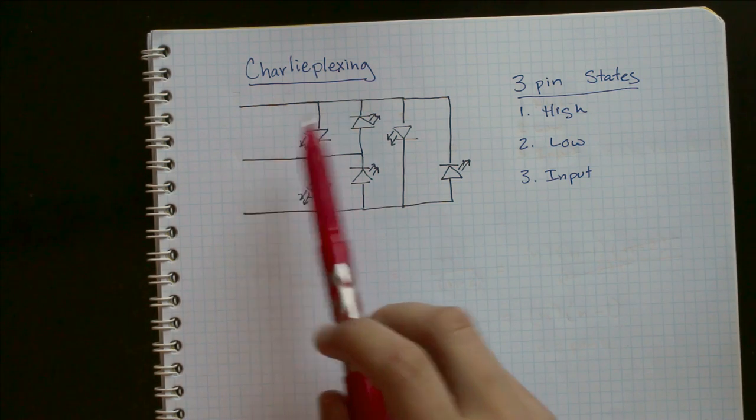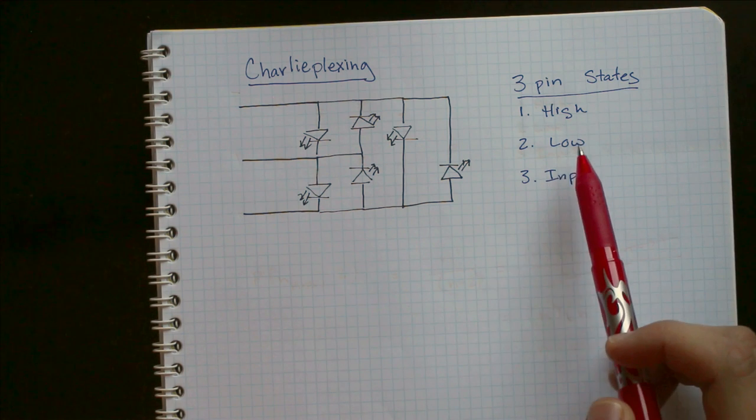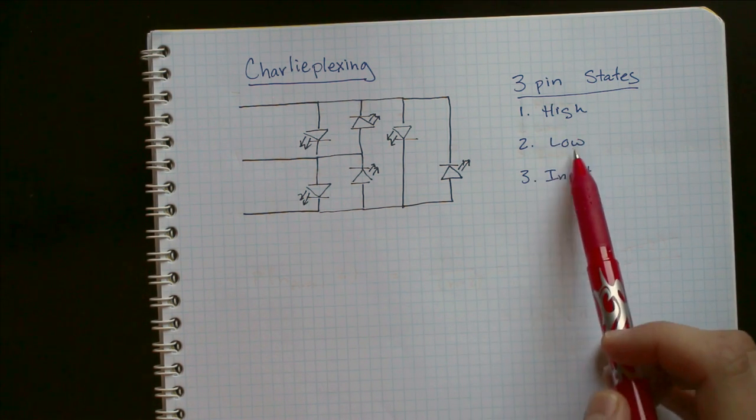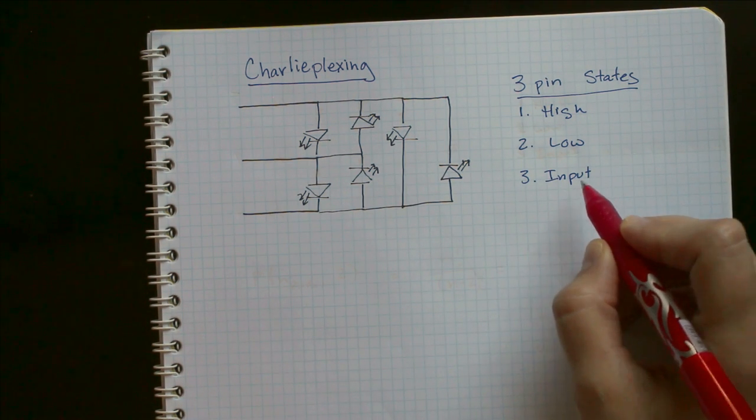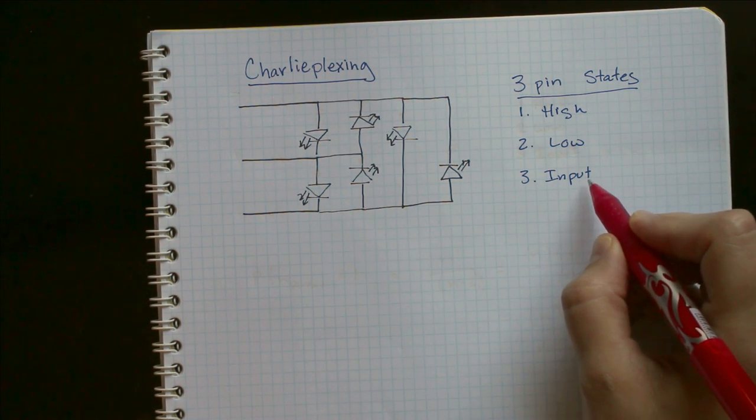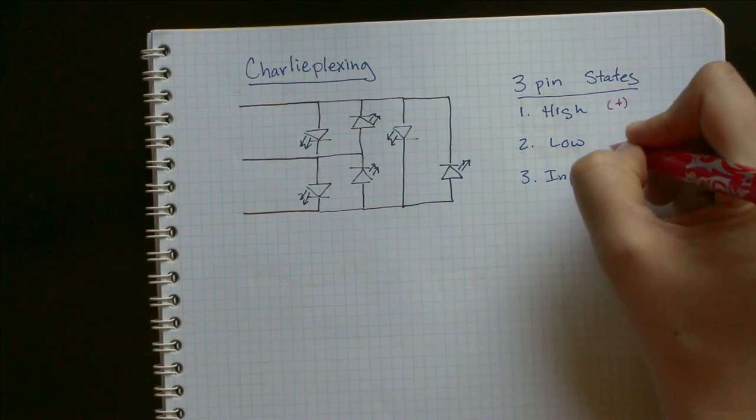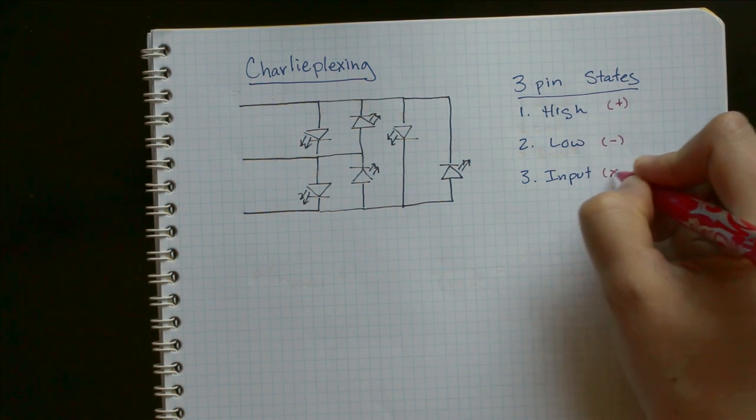And this works because microcontrollers have three states: high, low, and input. The pins can be in three states: high, low, or input. And input has a high impedance, so we can think of it as disconnected. So I will use these symbols to represent their states.